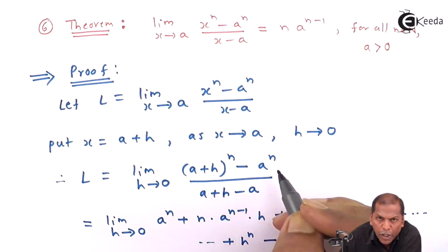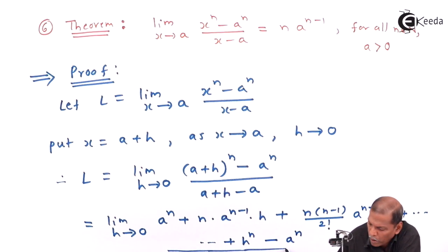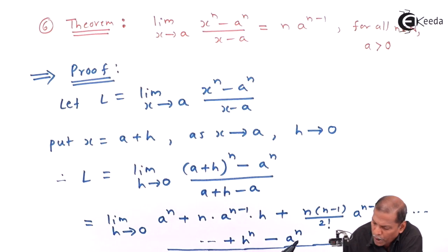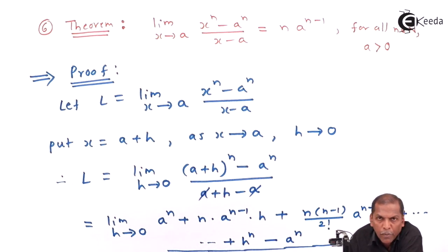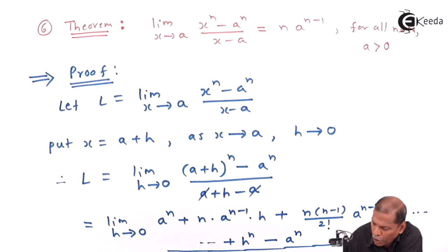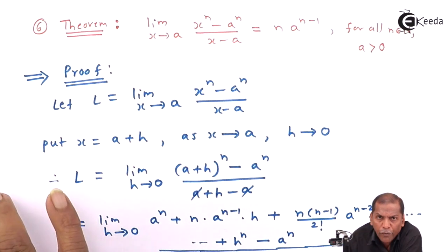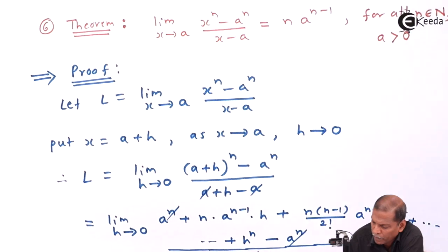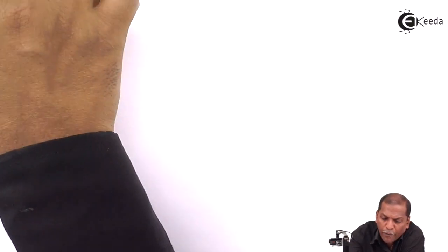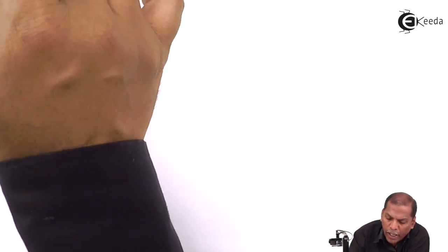Then minus the next term a raised to n, written as it is, and the whole thing is divided by the denominator. Here if you observe, plus a and minus a cancel in the denominator, leaving only h. Also a raised to n and minus a raised to n cancel, and from the remaining terms we take h common.